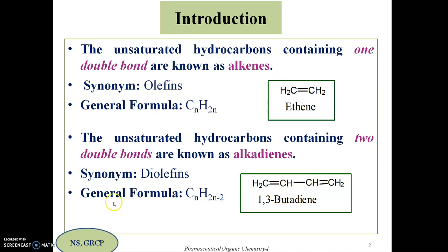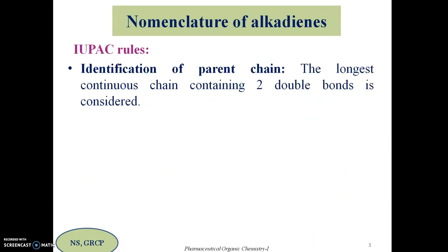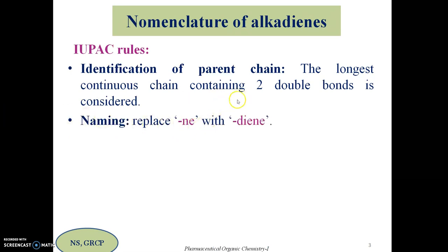This is an example of an alkadiene — a four-carbon molecule having two double bonds at alternative positions. The name of this molecule is 1,3-butadiene. The word alkadiene itself is the IUPAC name of these molecules. The first important IUPAC rule is to identify the parent chain: the longest continuous chain containing two double bonds.